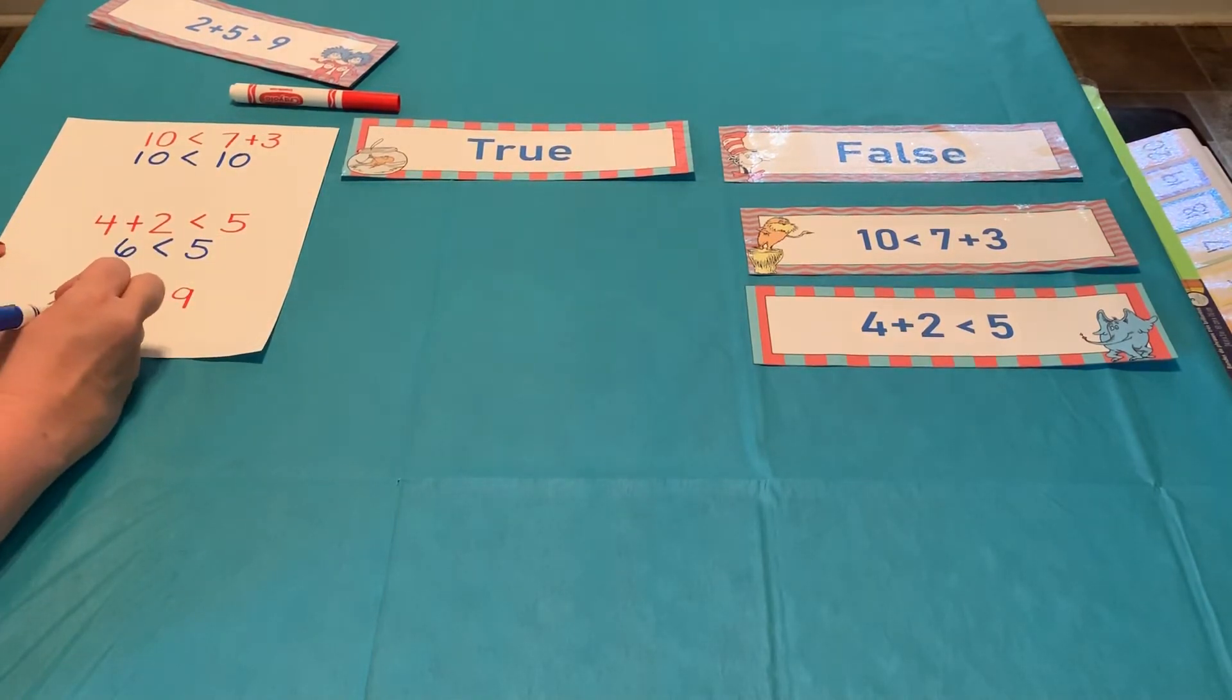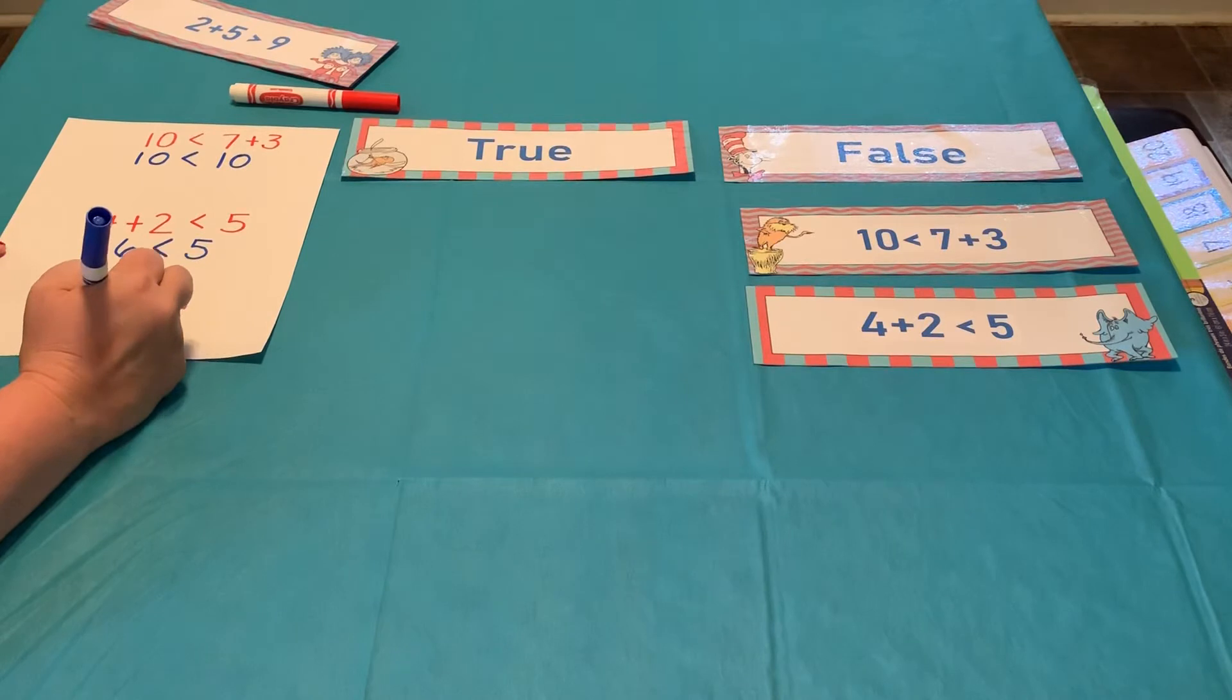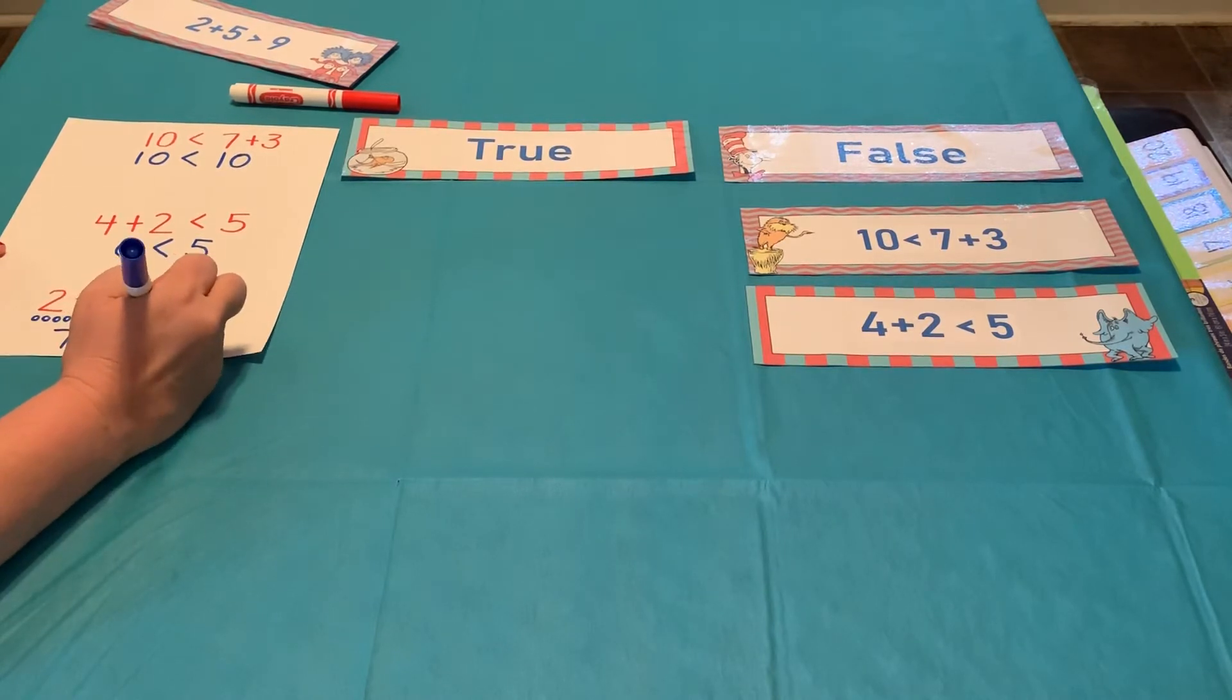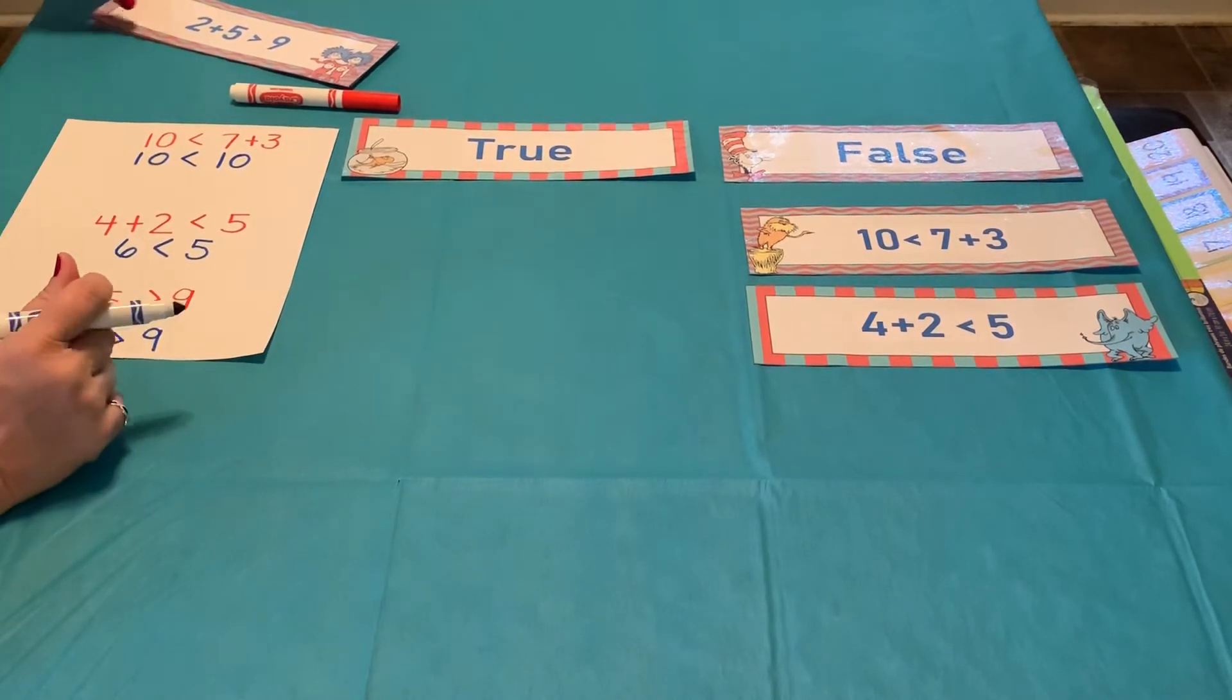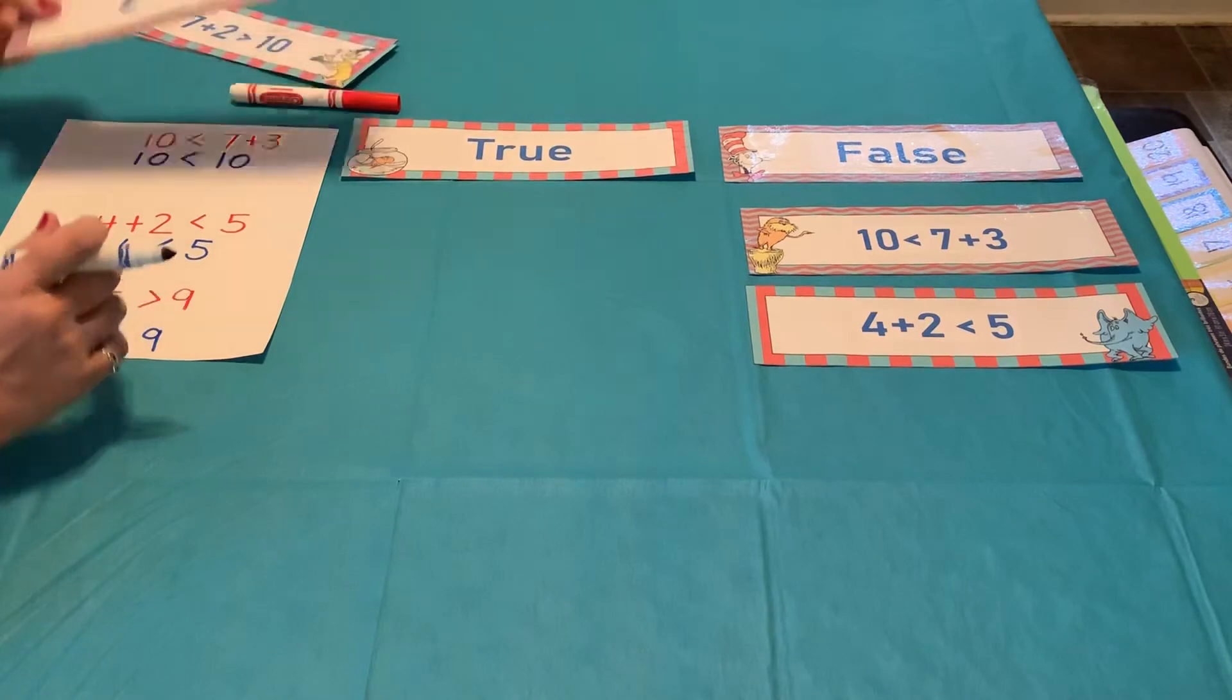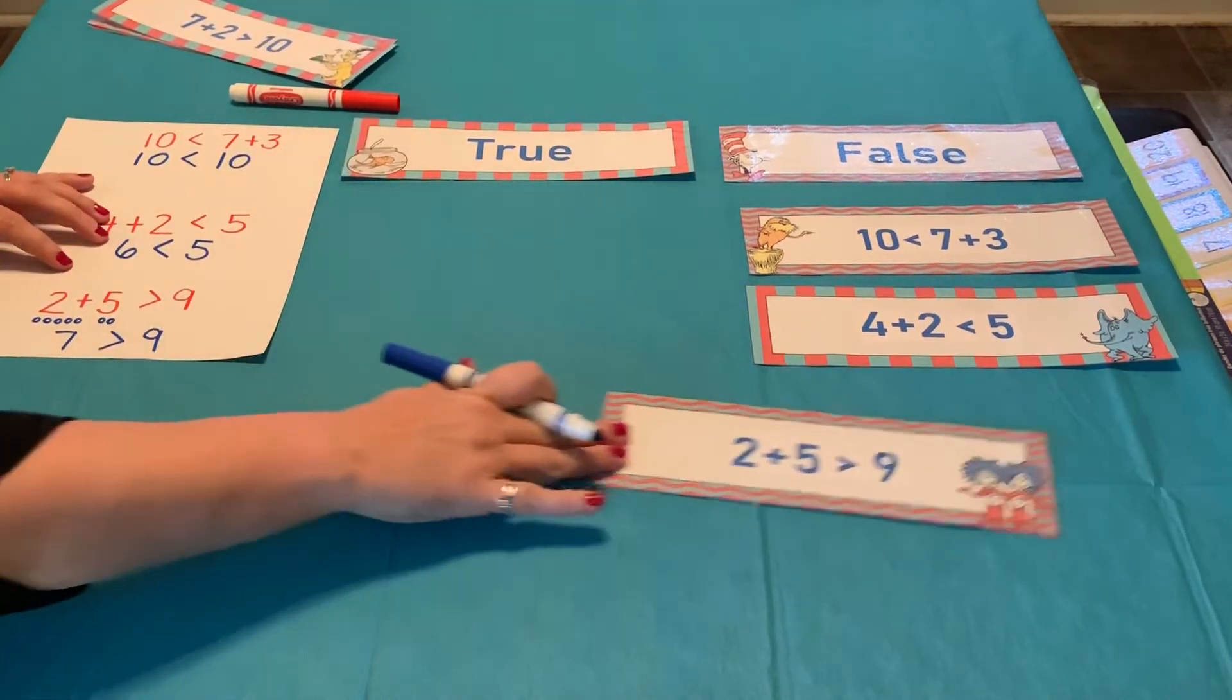1, 2, 3, 4, 5, 6, 7. 7. 7 is greater than 9. All right. Is the alligator eating the biggest number? No. He's getting disappointed. He's eating that small number again. So, I'm going to put that one over there in my false category.